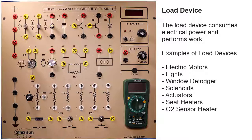The load devices on this trainer board are two bulbs, a light emitting diode, a buzzer, a dual filament light bulb, and a DC motor.